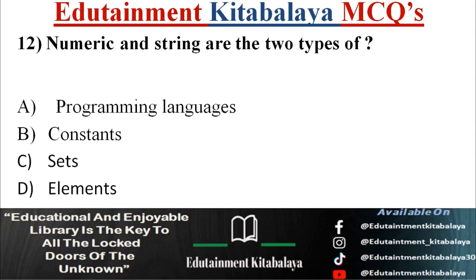Question number 12. Numeric and string are the two types of? A. Programming languages. B. Constants. C. Sets. D. Elements. Correct answer is B. Constants.